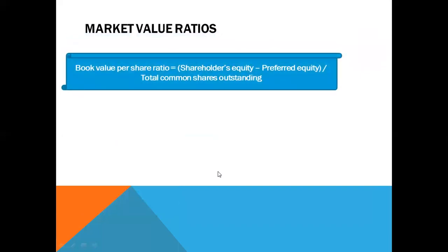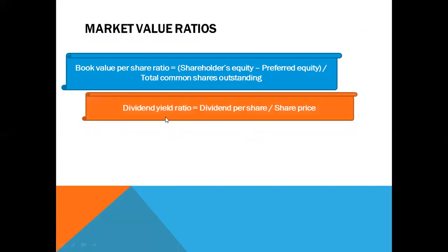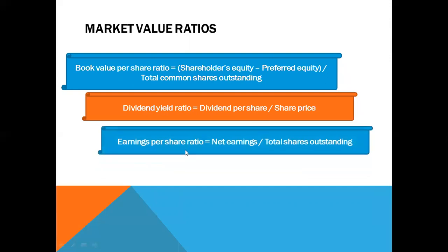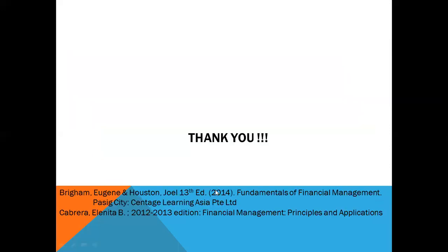For market value ratios, we have: book value per share ratio, equal to shareholders' equity minus preferred equity divided by total common shares outstanding; dividend yield ratio, equal to dividend per share over share price; earnings per share ratio, equal to net earnings over total shares outstanding; and price-earnings ratio, equal to share price over earnings per share. Thank you so much for watching — that's all for the financial ratios.